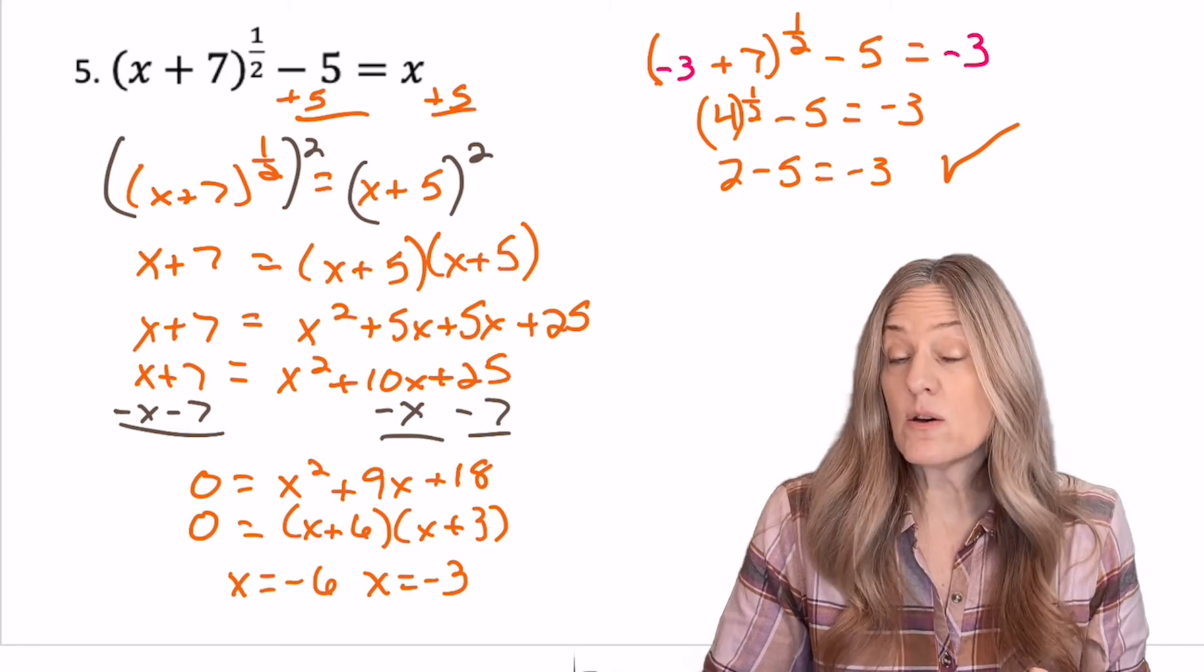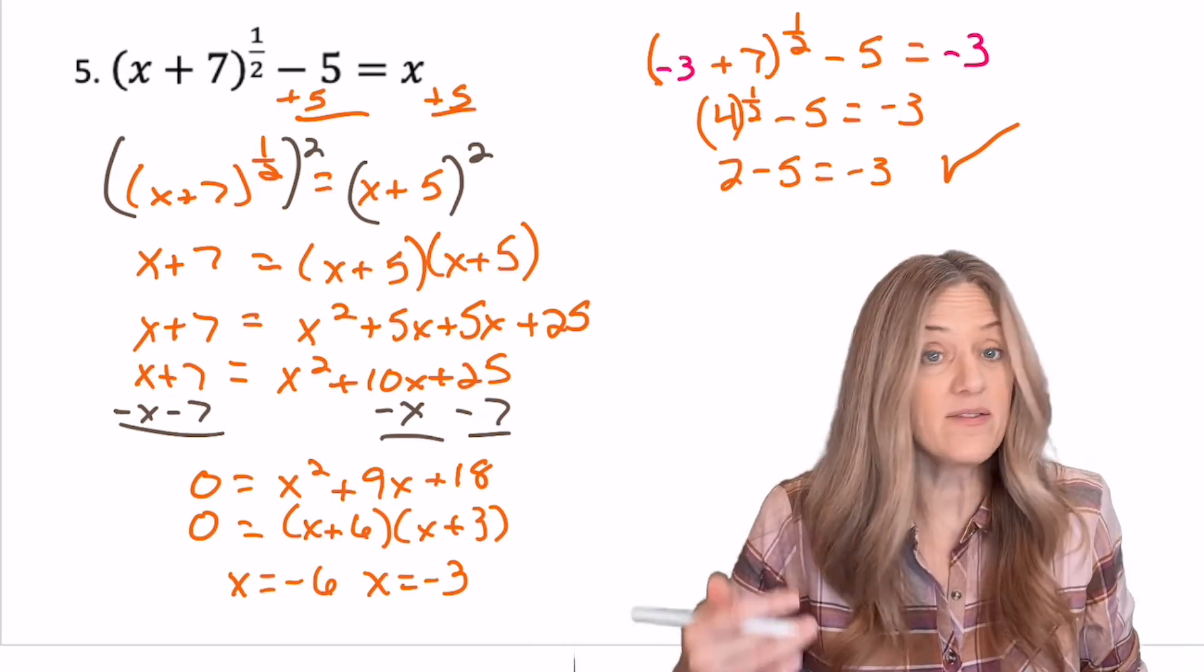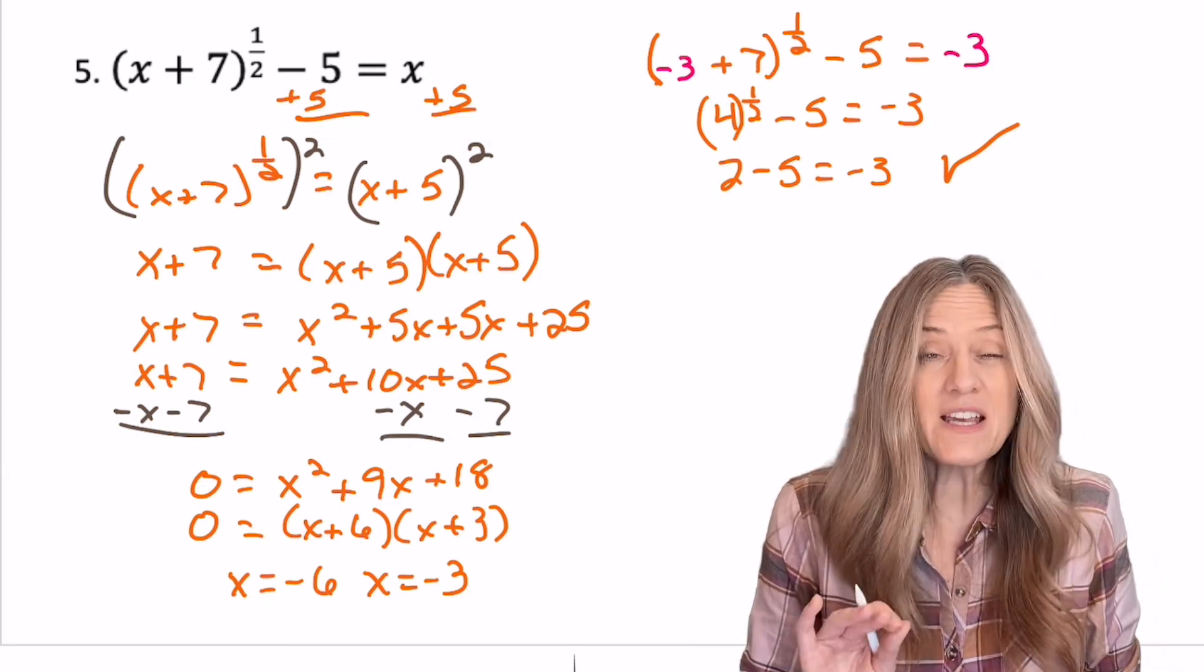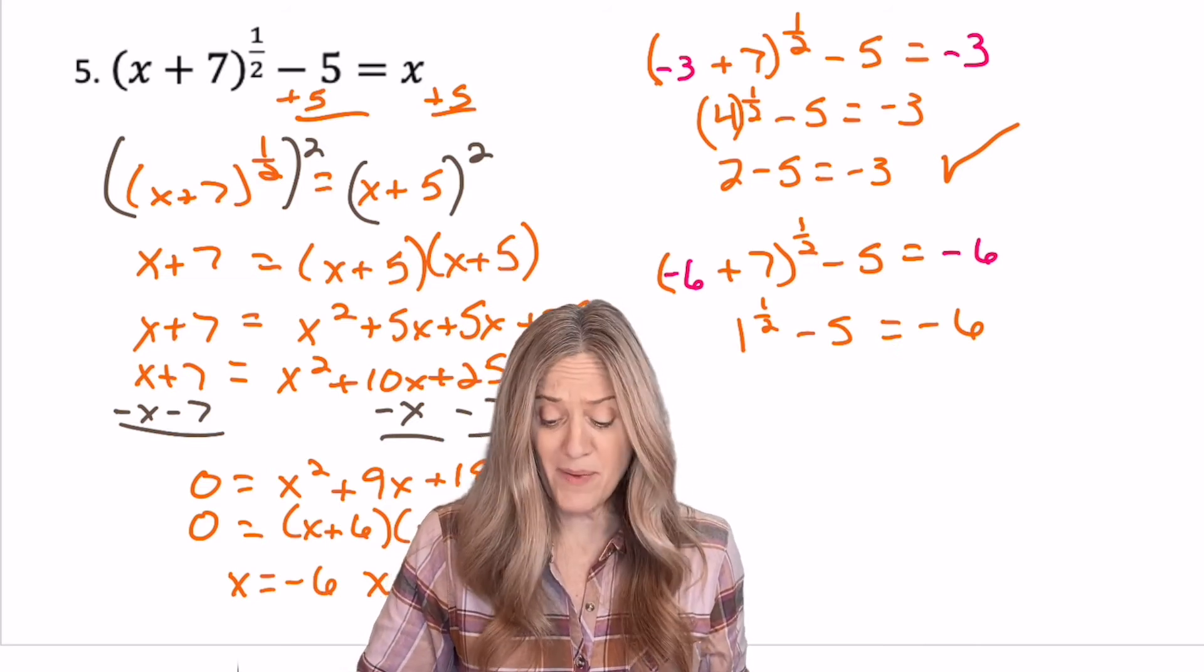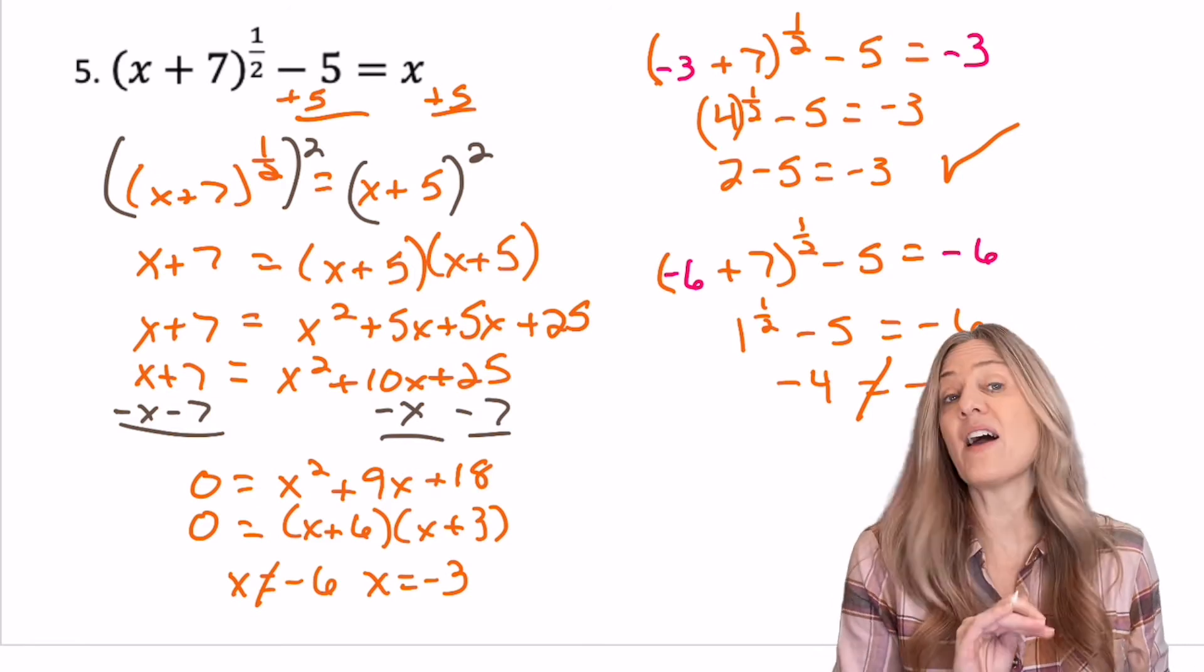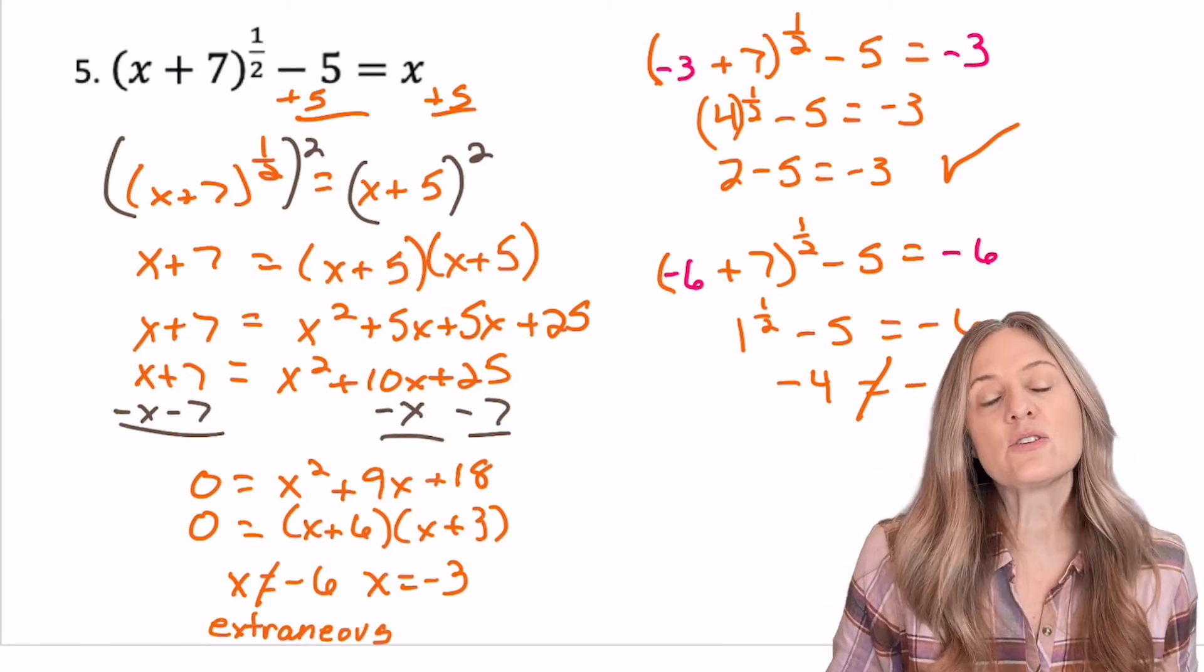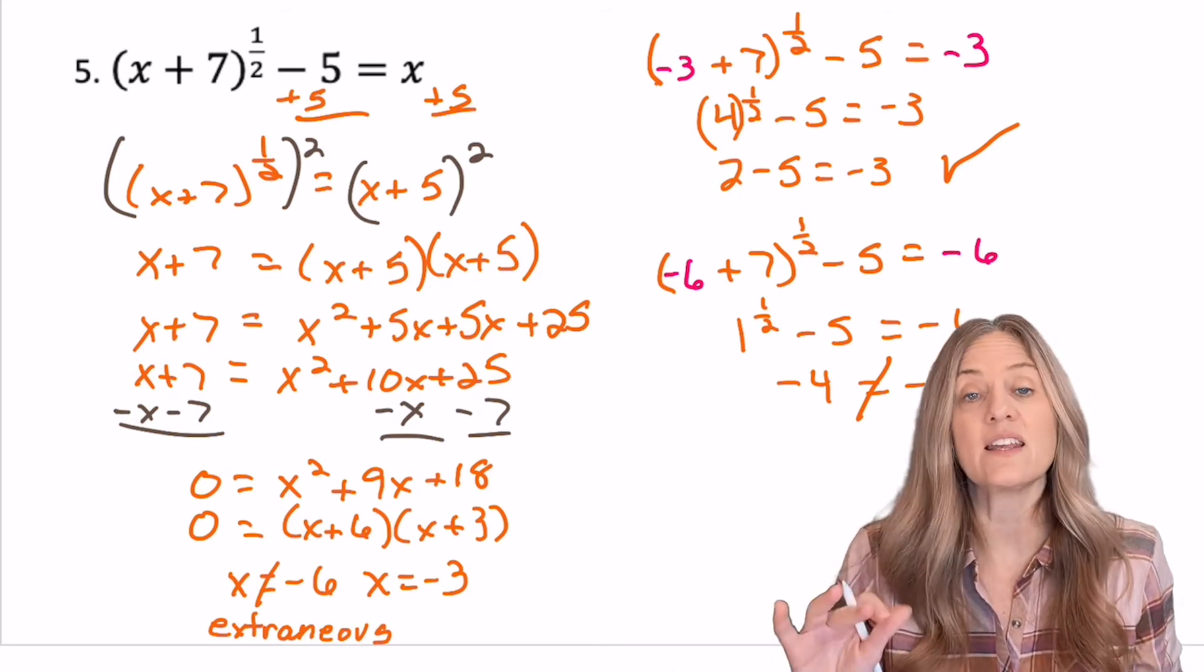So I plug in negative three to the original equation. I get four to the one half power. Well, that's just square root of four, which is two. Two minus five. Yep. It equals negative three. Let's test negative six. I know I told you one of them is not going to work, but let's make sure I didn't make a mistake. Square root of one is one minus five would be negative four. Negative four does not equal negative six. That is not the correct answer. So let's make sure and clearly mark out x cannot equal negative six. Say that it is extraneous. Let's write that out and make sure that when you're communicating to us, you show us both answers, but then clearly mark which one is extraneous and leave the one that is the correct answer.